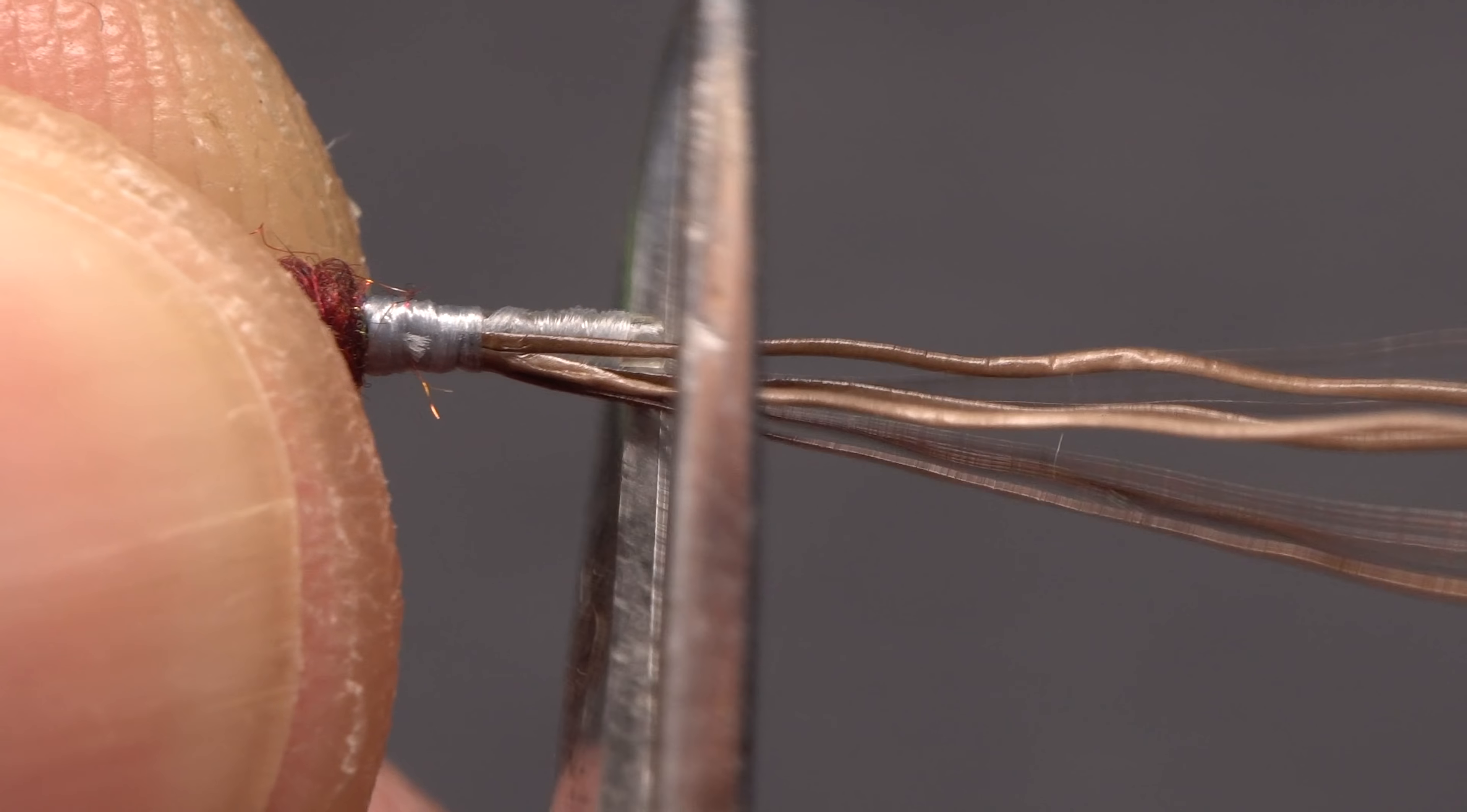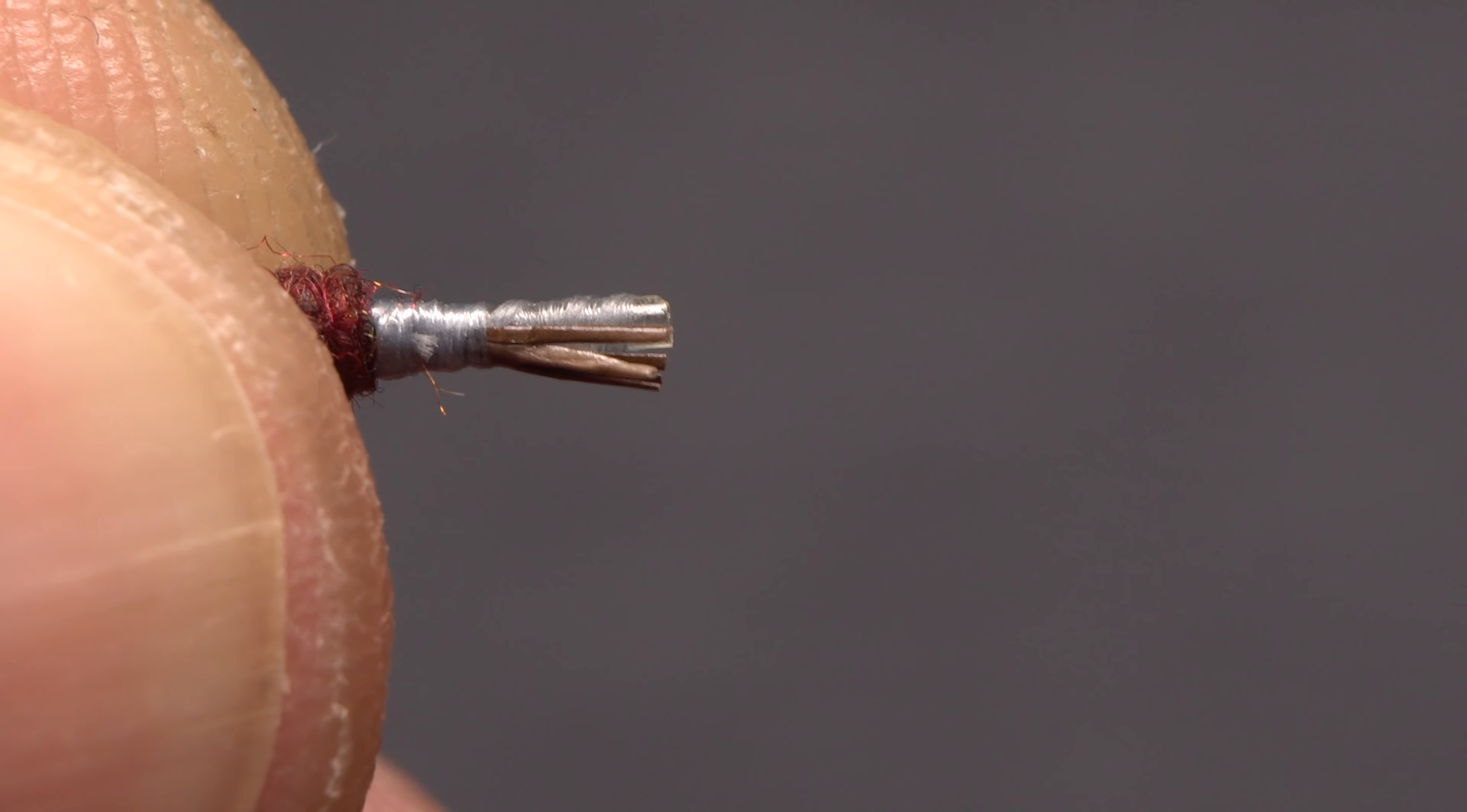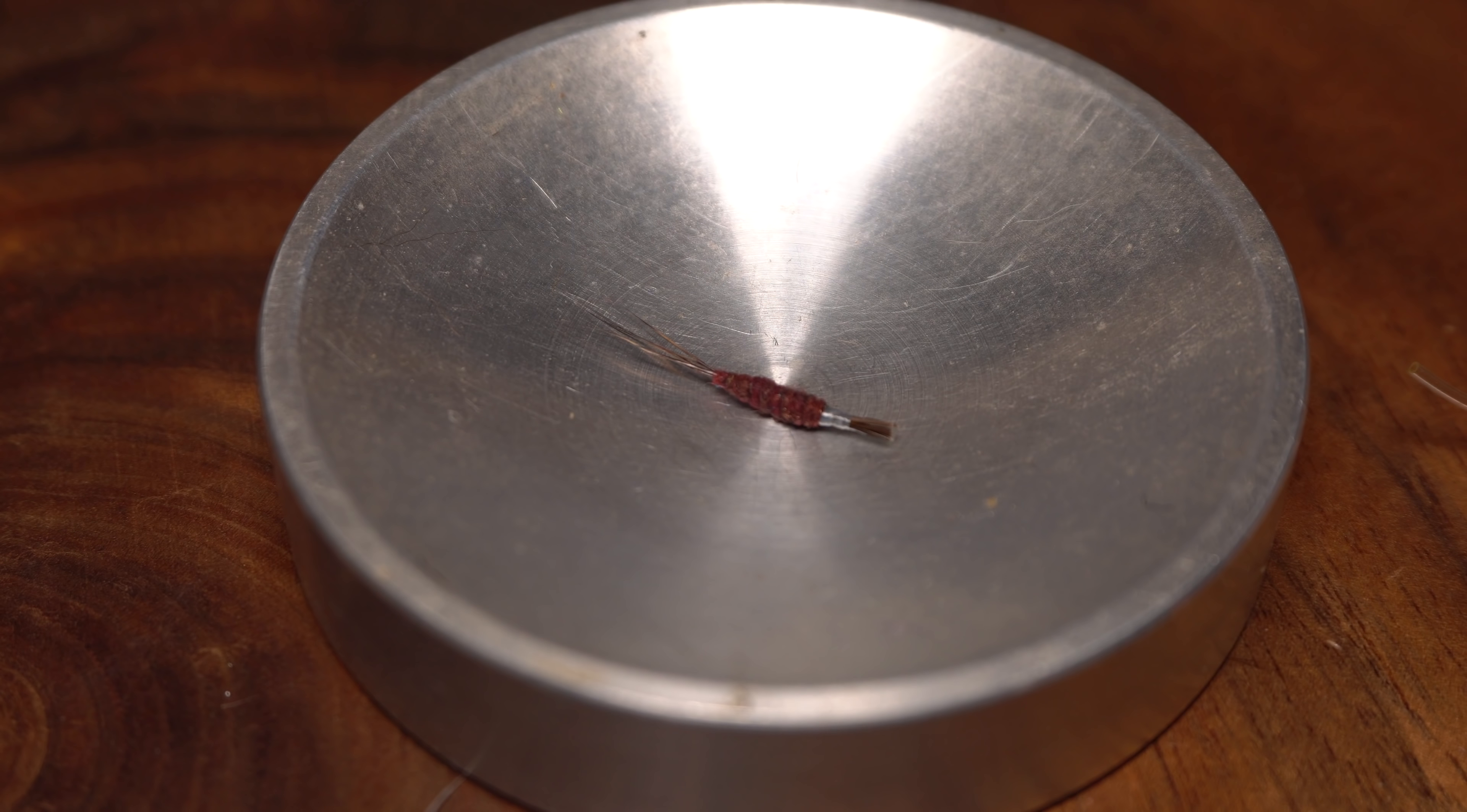Snip off the excess butt ends of moose body hair. Set the extended body somewhere safe as they have a tendency to wind up on the floor or get lost on your tying bench.